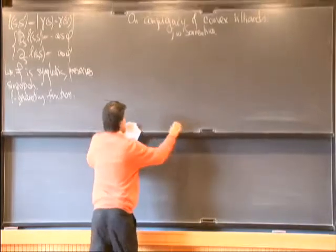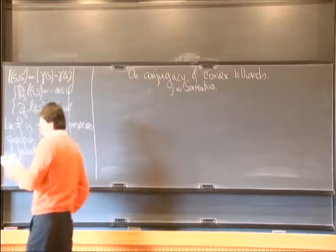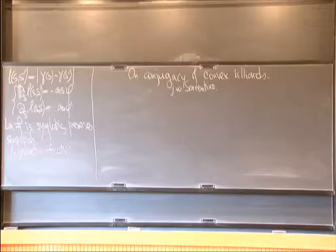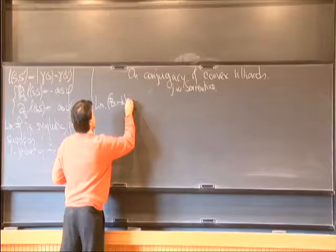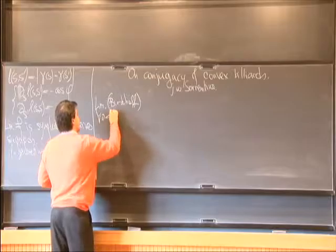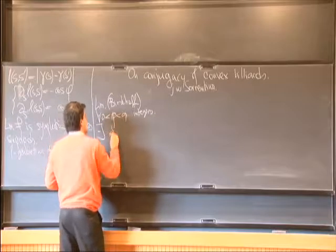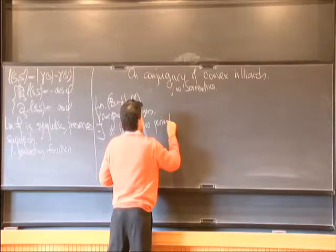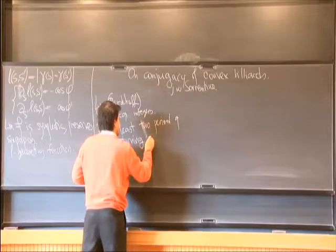Now I'll define the lens spectrum for this mathematical model. I need to find periodic orbits for the billiard problem. There is a simple lemma by Birkhoff which says that if you pick any two coprime integers p and q, then there exist at least two periodic orbits of period q.